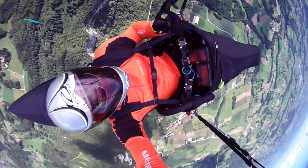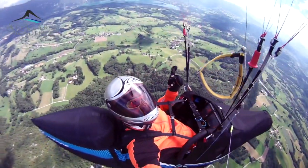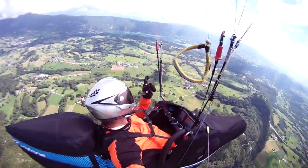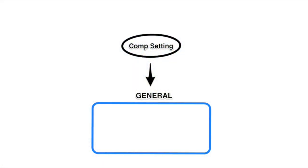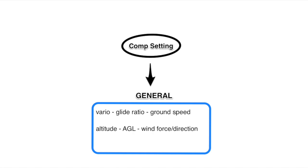So Seiko, what are for you the general settings for competition? On my GPS for general info there are: value, glide rate, ground speed, altitude, altitude above ground, wind force and direction, and time to the next turn point.